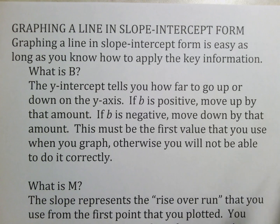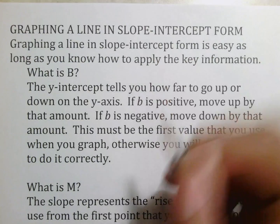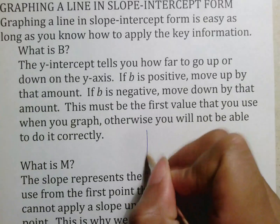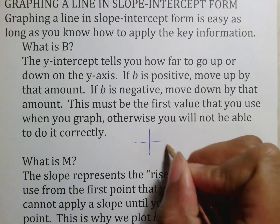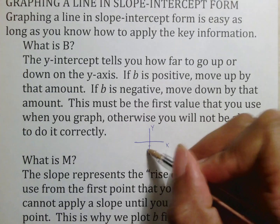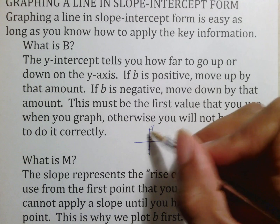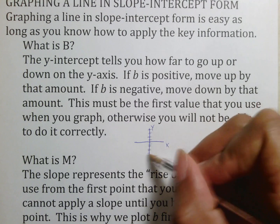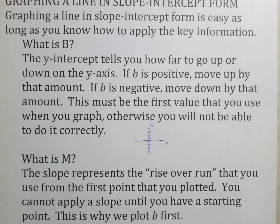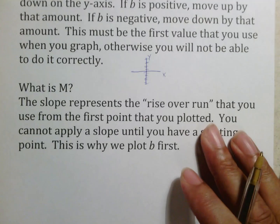B goes up or down because the y-intercept is going to be somewhere on the y-axis. Here is your x-axis, here is your y-axis, and your y-intercept will be somewhere along the y-axis.